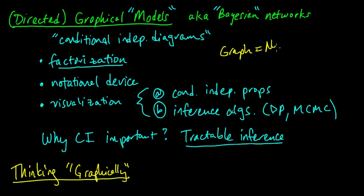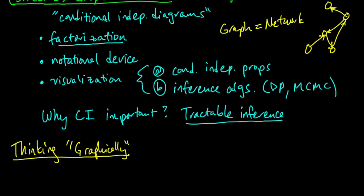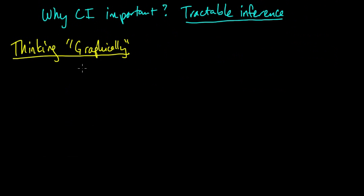By a graph, I mean a graph in the mathematical sense — colloquially called a network. A network has nodes and links, or in math, vertices and edges. The vertices are the nodes and the edges are the links. A directed graphical model is one of these where the edges are directed — each edge is an arrow. That's what I mean by thinking graphically.